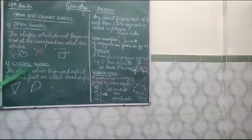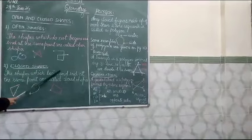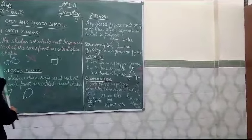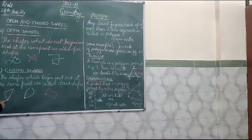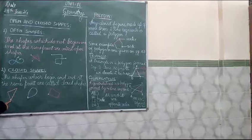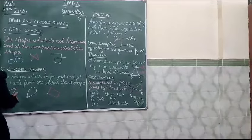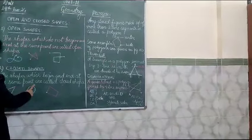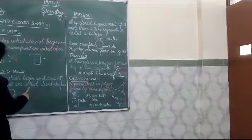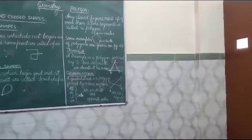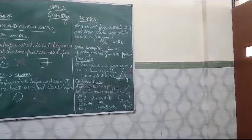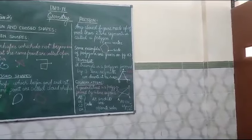Next one is the closed shapes. The shapes which begin and end at the same point are called closed shapes. Look here in this figure, we start from this point and then we end here at the same point. So this type of shape is known as a closed shape. Likewise, shapes where the starting and the end point are the same common point are known as closed shapes.